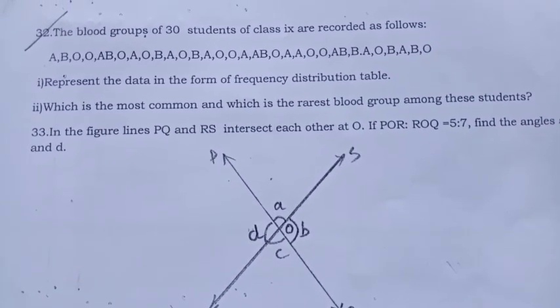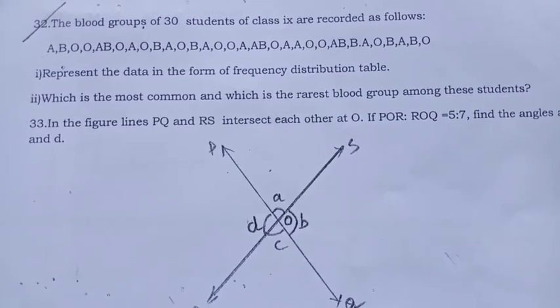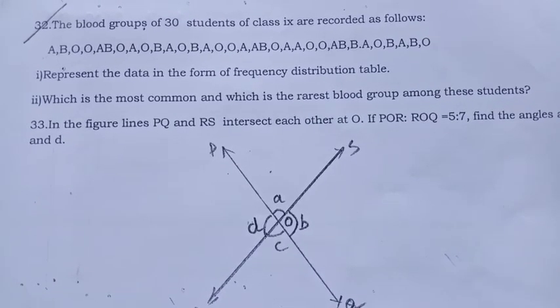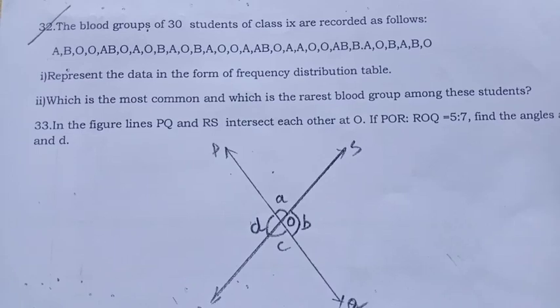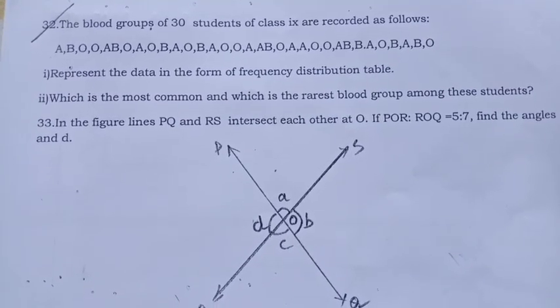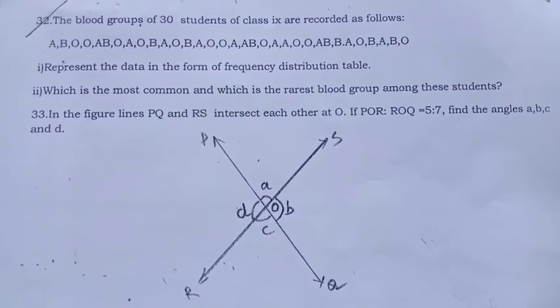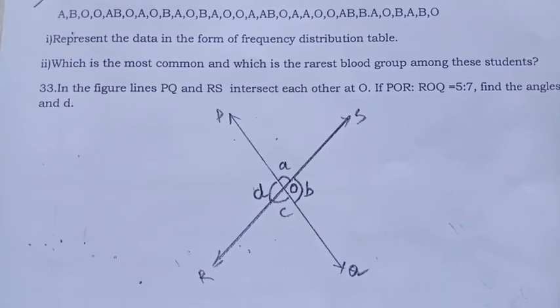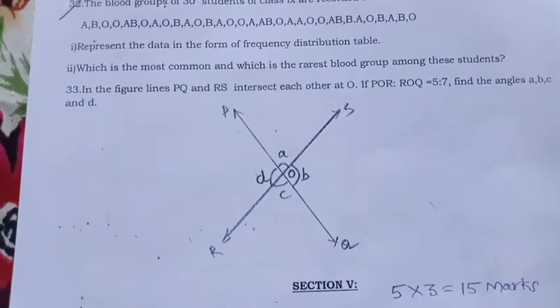Represent the data in the form of frequency distribution table, which is the most common and which is the rarest blood group among these students. In the figure lines PQ and RS intersect each other at O, if POR to ROQ equal to 5 is to 7. Find the angles A, B, C and D. Look at the given picture.